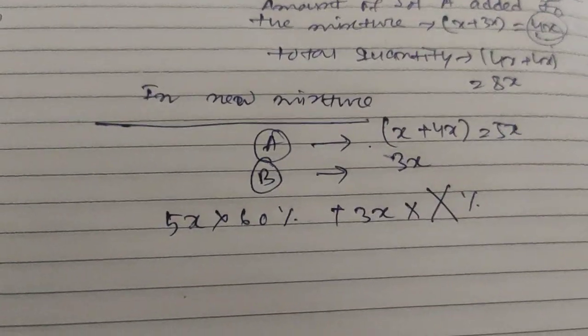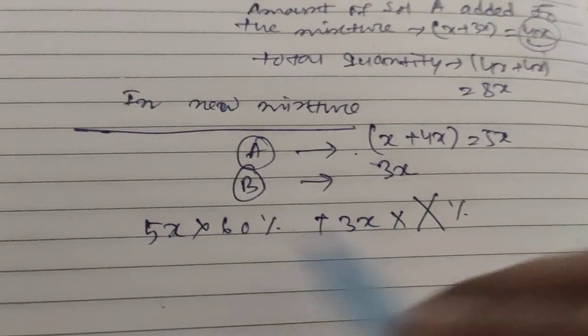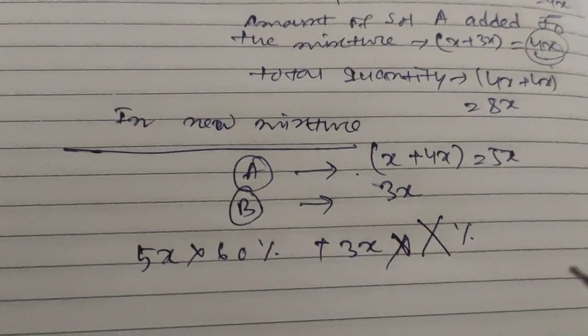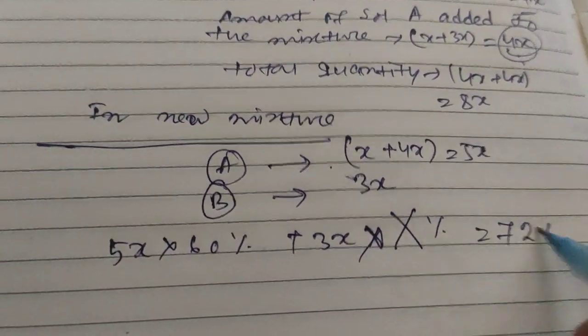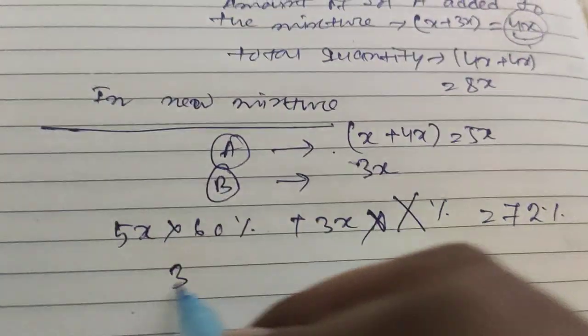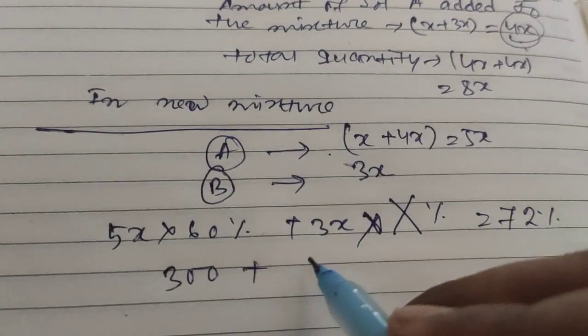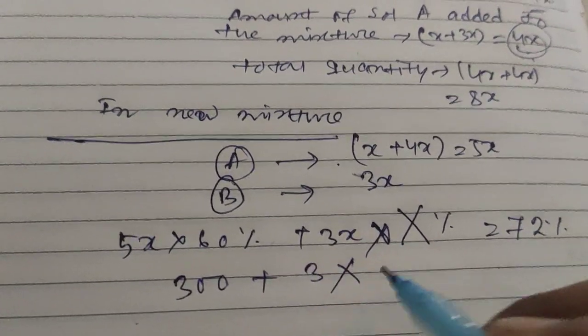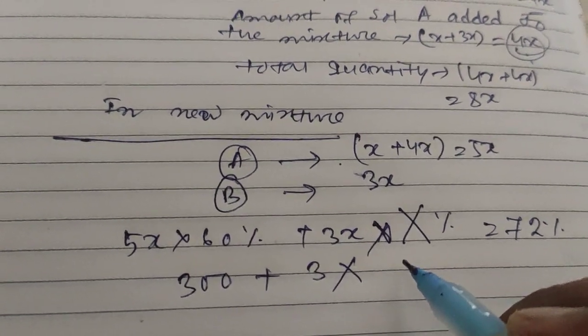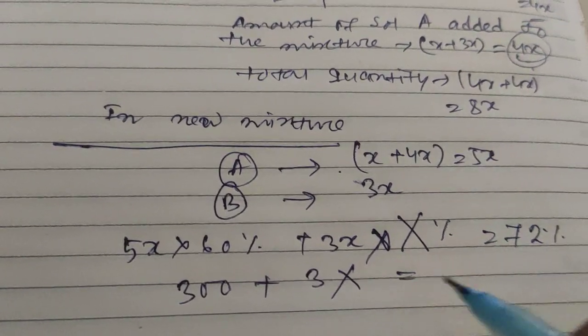So 5x into 60% plus 3x into capital X percent, this total is 72%. So 300 plus 3x into capital X.